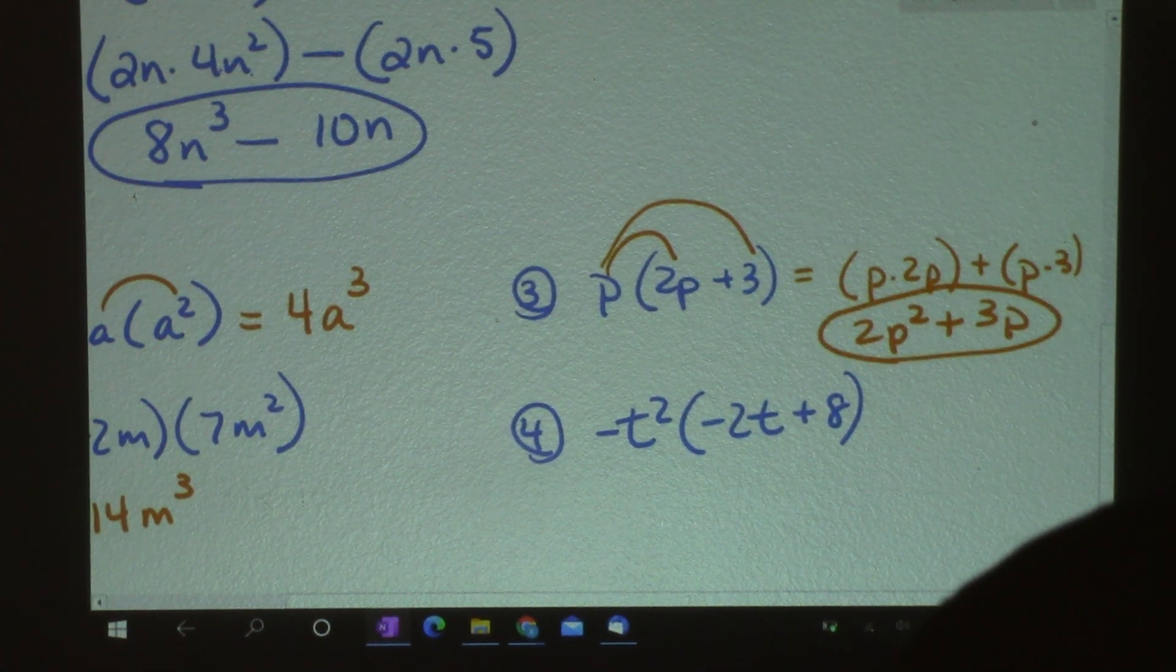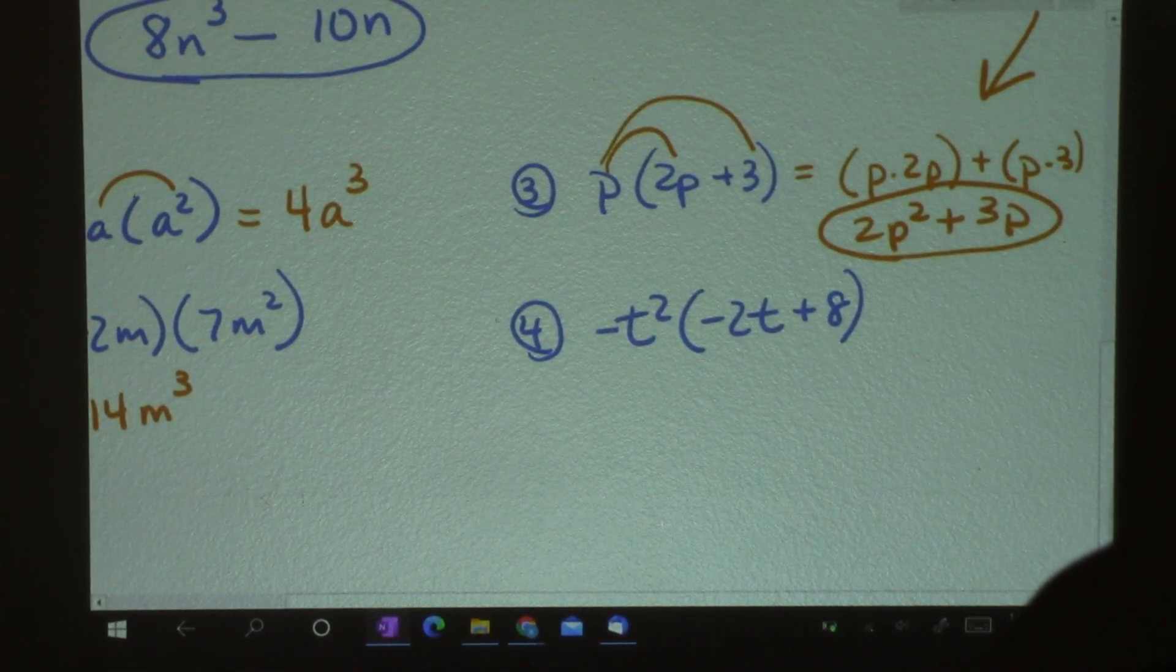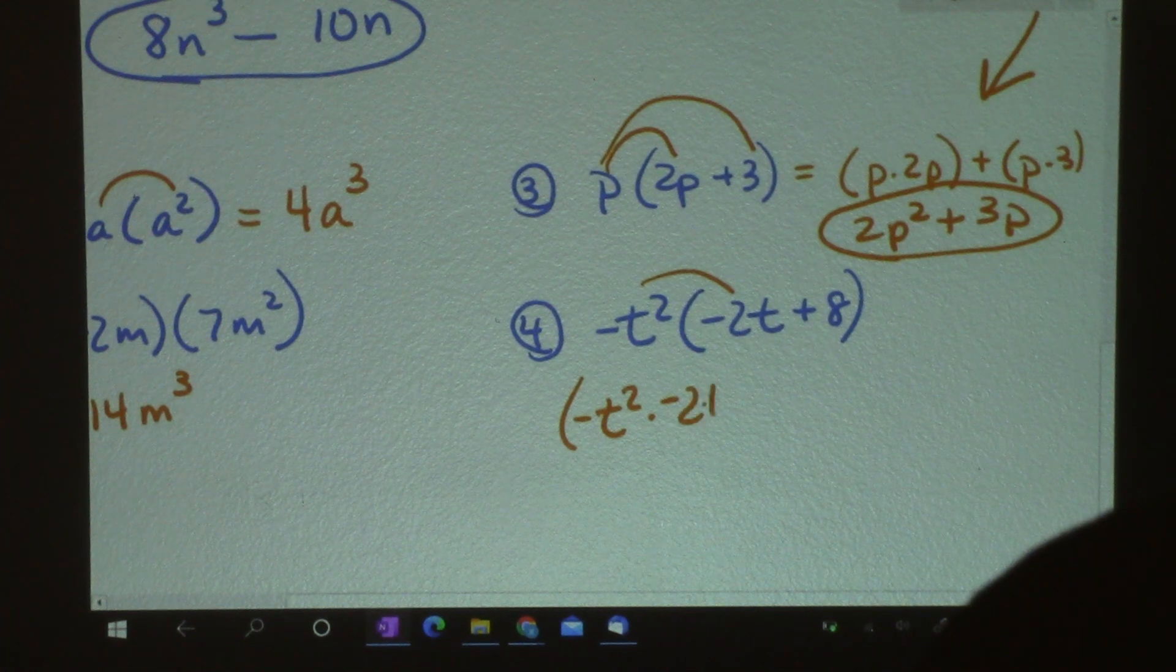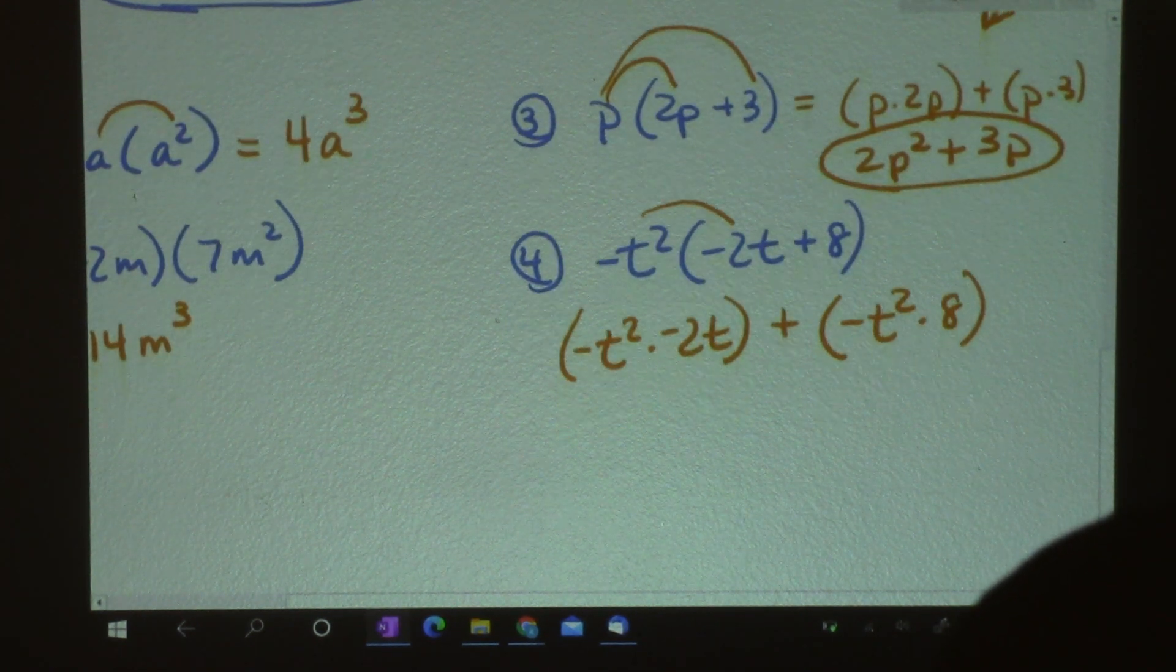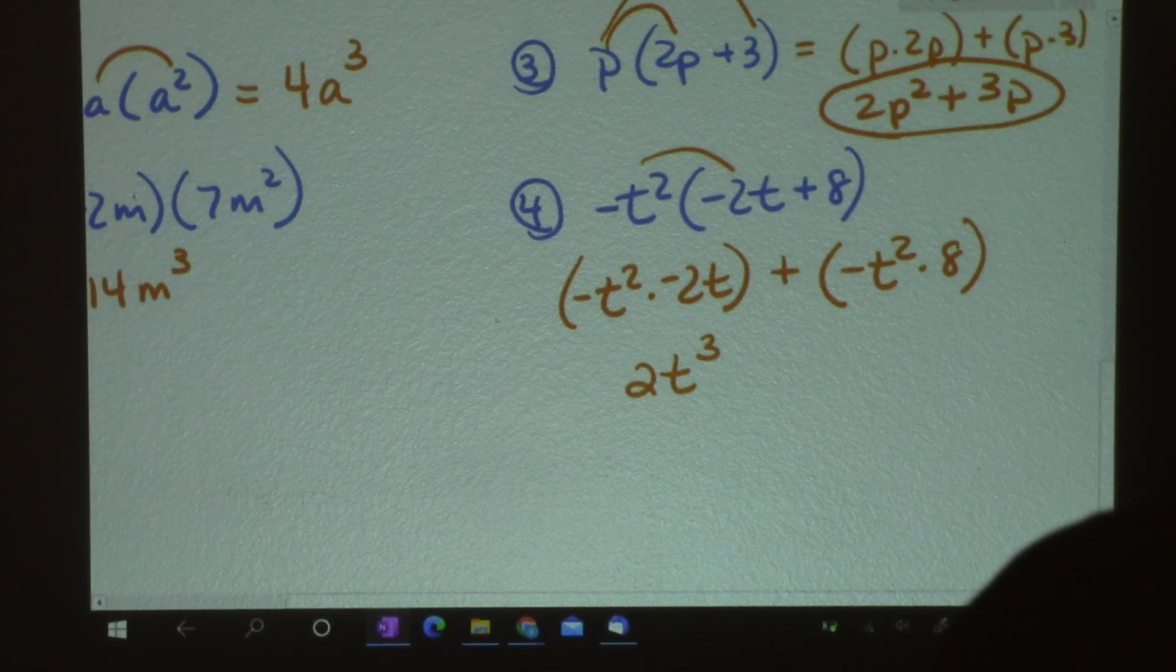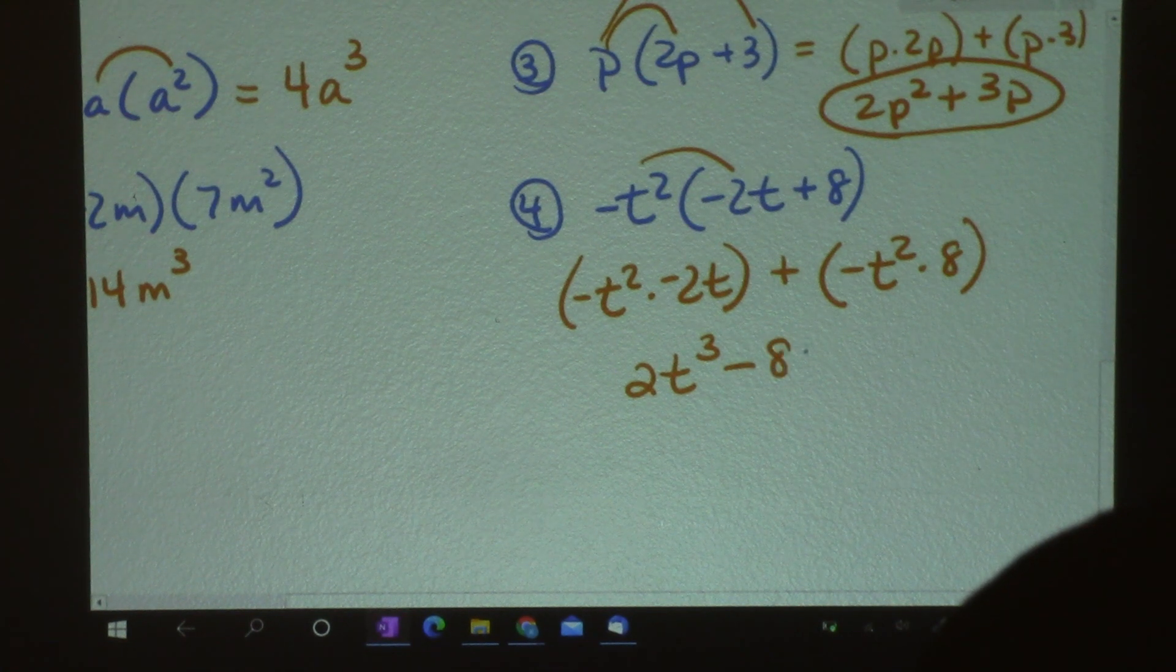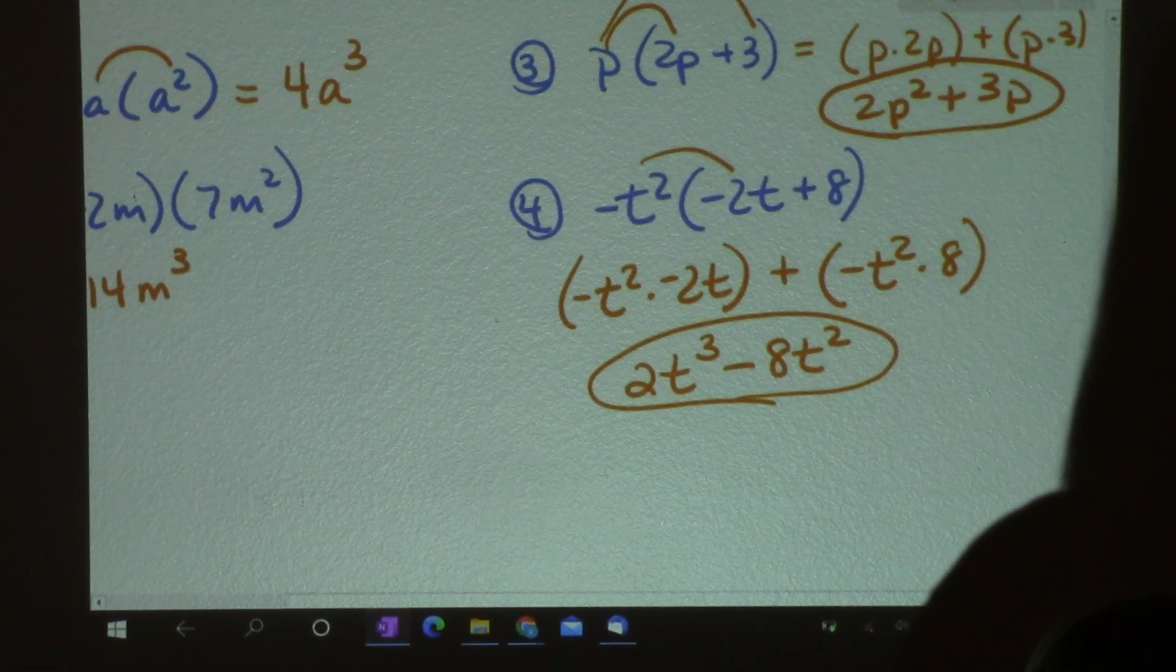I'm going to give you a few to do on your own already. So you can work on these. 4a times a squared. Number 2, negative 2m times 7m squared. Number 3, p times 2p plus 3. And then number 4, negative t squared times negative 2t plus 8. So those are your OYOs. Go ahead and pause the video and try those, and I will just keep going, and we'll go over them together.